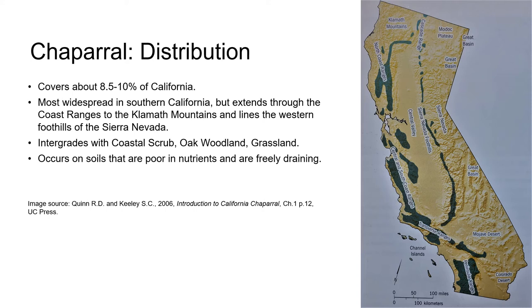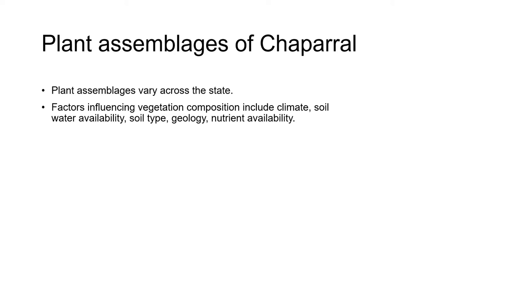In the Sierra foothills, Chaparral gives way to evergreen forests at higher elevations where water availability is greater. Chaparral typically occurs on soils that are poor in nutrients and very freely draining — important factors to remember when using chaparral plants in cultivated landscapes. The plant assemblages in Chaparral vary across its distribution, with the driving influences being climate, soil water availability, soil type, and the composition of the underlying rock and its influence on nutrient availability.